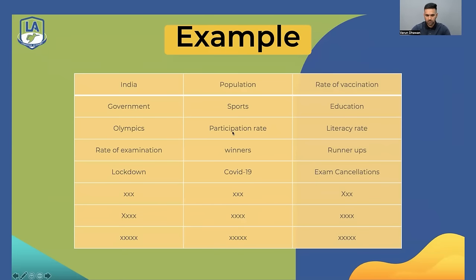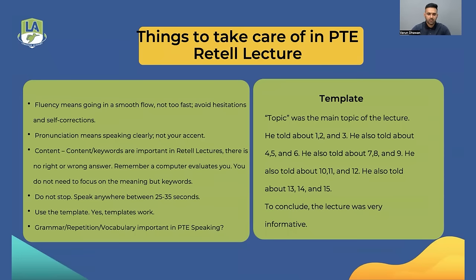For example, using keywords from a lecture: 'India was the main topic of the lecture. He told about India, population, and rate of vaccination. He also told about government, sports, and education. He told about Olympics, participation rate, and literacy rate. He told about rate of examination, winners, and runners up. He told about lockdown, COVID-19, and exam cancellations. To conclude, the lecture was informative.' If you only have six keywords, simply repeat the same keywords across sentences — no issues with that.